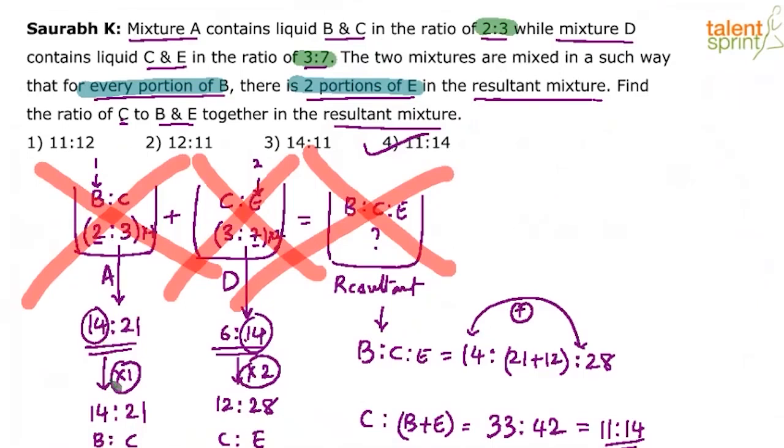After that, just multiply the first ratio by 1, second ratio by 2 because every portion of B, we want to take two portions of E. You will get the final ratio very easily. Once you have got the final ratio, you can get the required answer.